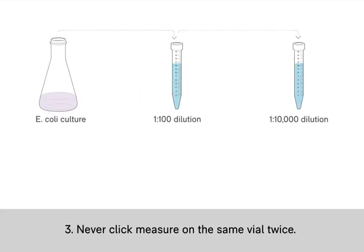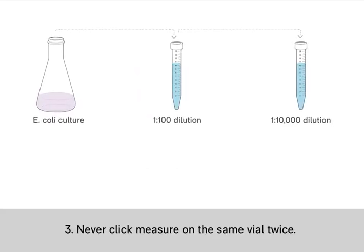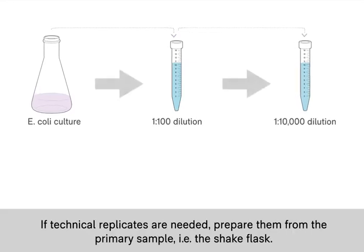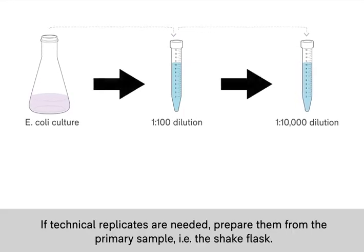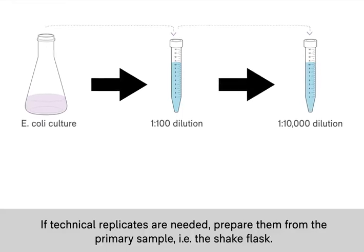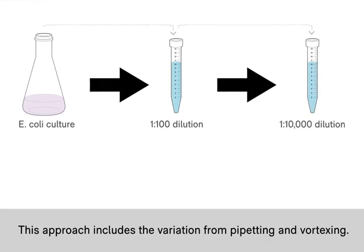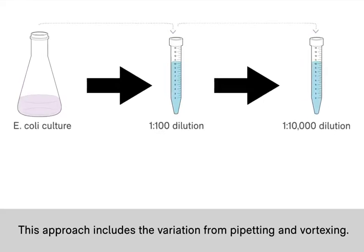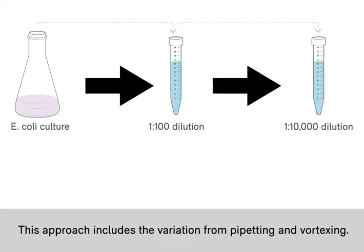The third reflection is that if you want technical replicates, you should never click measure on the same vial twice. It's much better to go back to the primary sample and repeat the dilutions. In my example, this would be the shake flask. This approach gives a more reliable result because it also includes the variation involved with pipetting and vortexing.